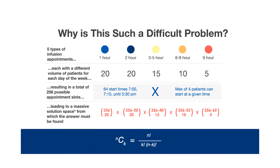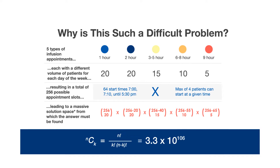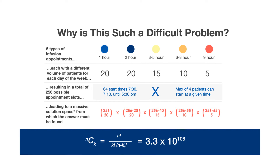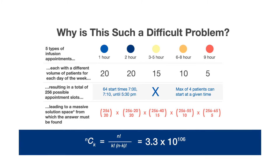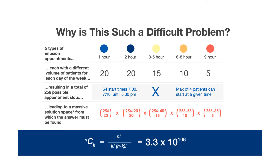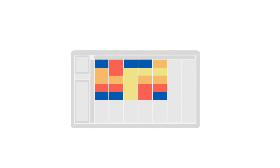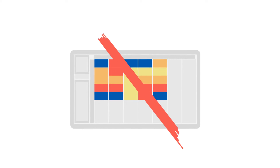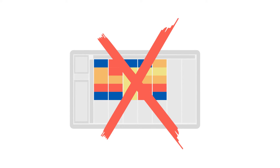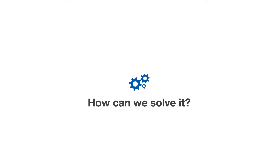A number with over 100 zeros behind it. There's absolutely no chance of stumbling on the right answer through simple rules like scheduling long appointments in the morning and short appointments in the afternoon, or by scheduling to a chair, a pod, or a nurse. Existing EHRs and scheduling systems don't even attempt to optimize the schedule either. How can we solve it?